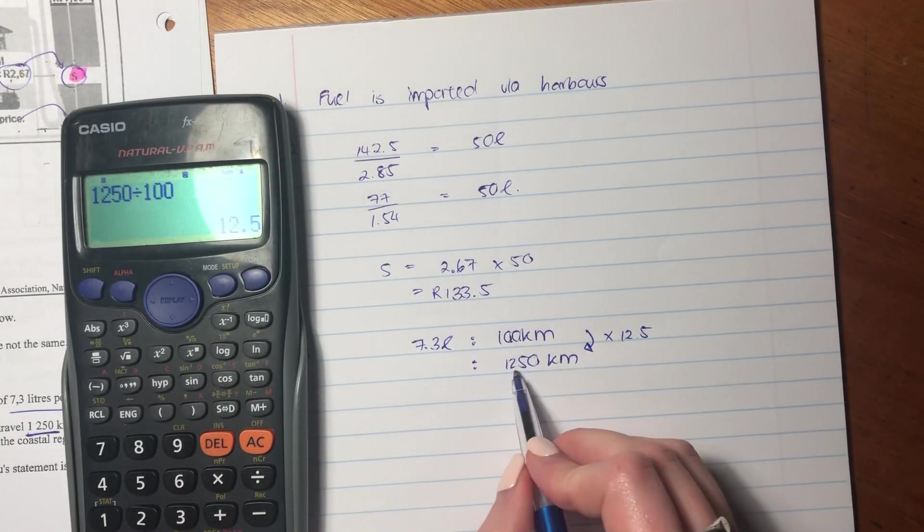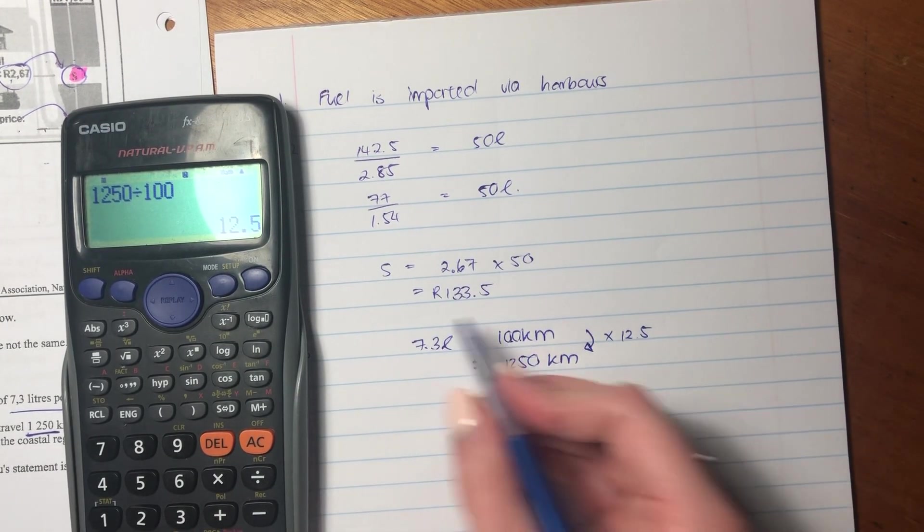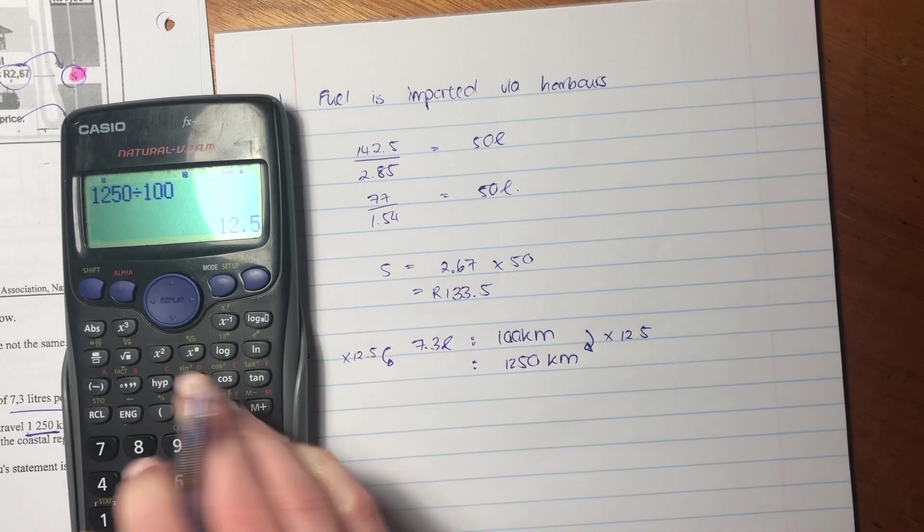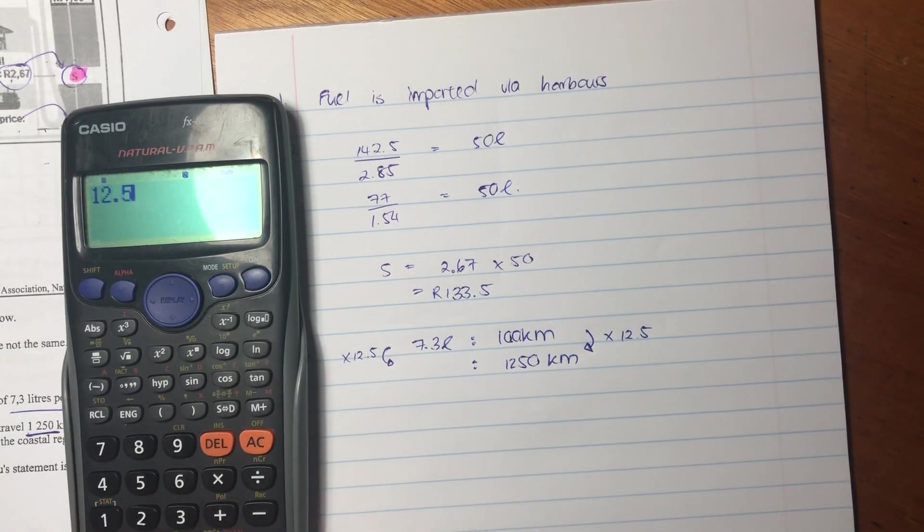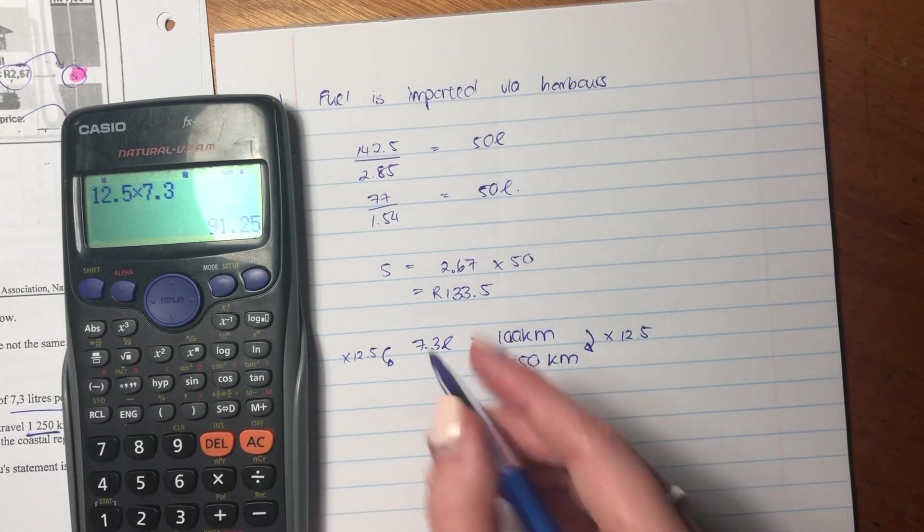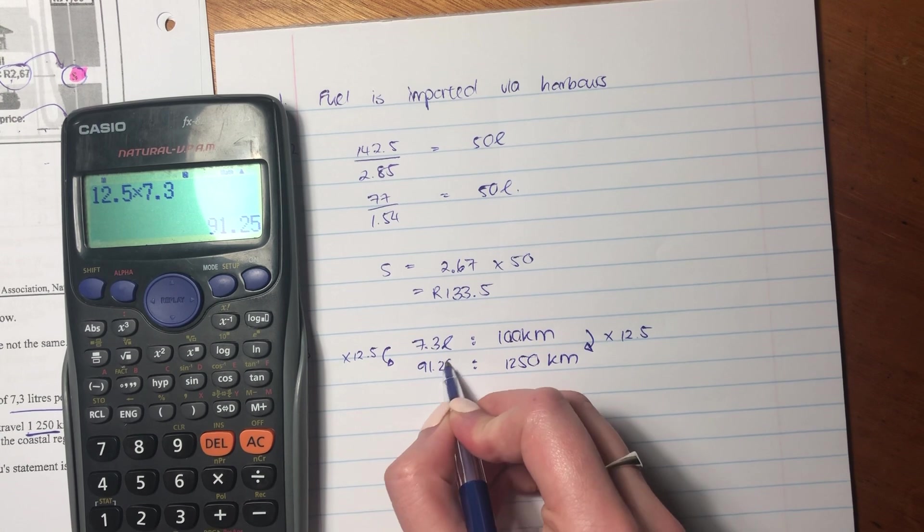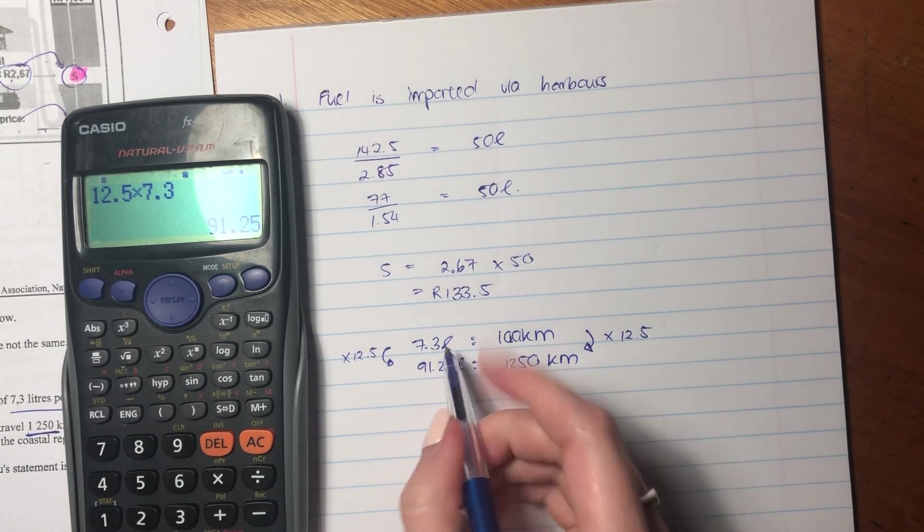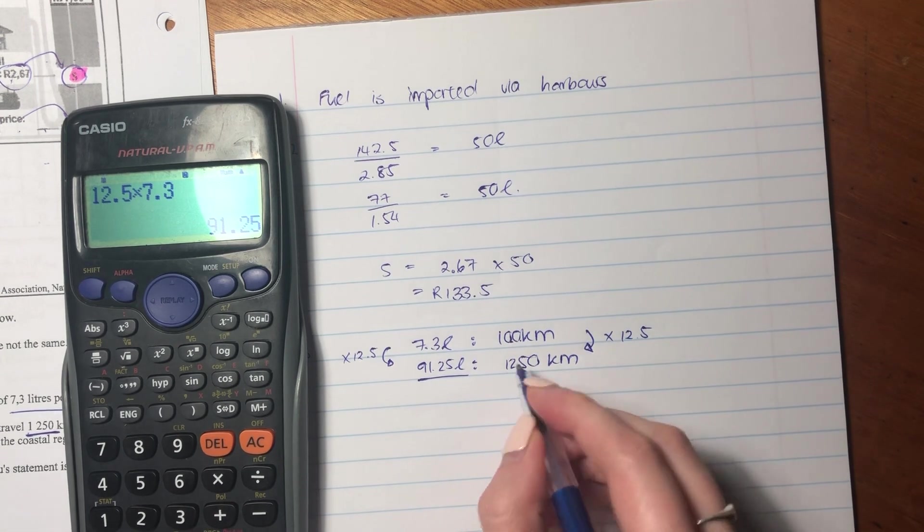What we do to the one side of a ratio, we have to do to the other. So we say 12.5 times 7.3, and that gives us 91.25 liters. So that is how many liters she needs to travel 1,250.